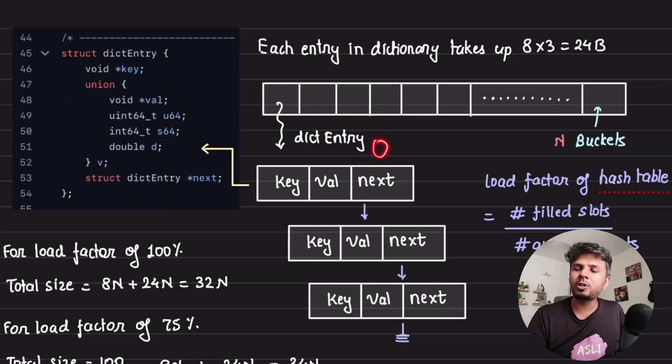I would be creating a dict entry and putting it there, using chaining as a way to do conflict resolution in my Redis dictionary.